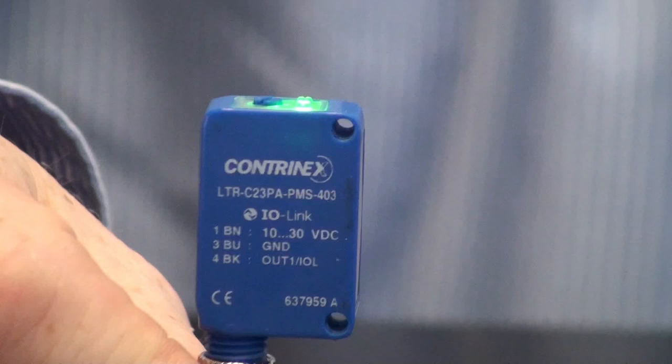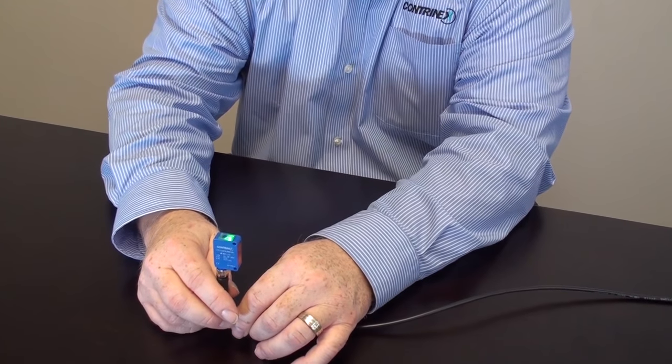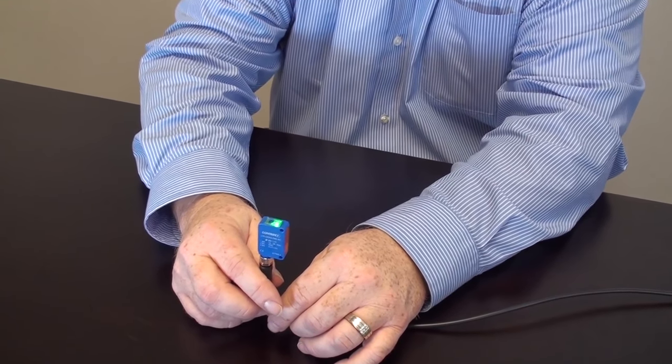I'd like to introduce Contronex's newest family of optical sensors, nicknamed the C23. The entire family is constructed of durable ABS plastic and has acrylic windows that are ultrasonically welded to provide a washdown rated sensor.